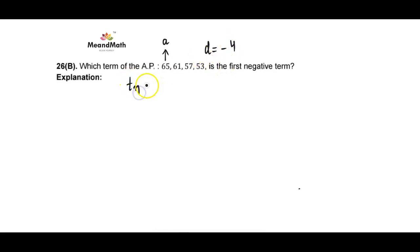Let's write the equation for the nth term. Tn equals A plus (n-1) times d. Let's substitute the values: 65 plus (n-1) times negative 4.